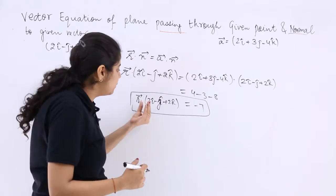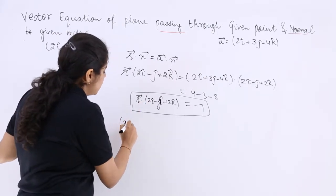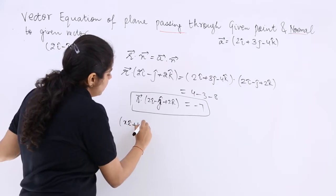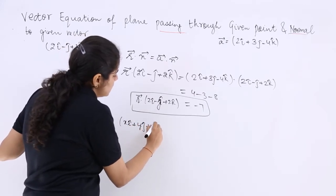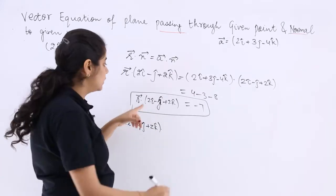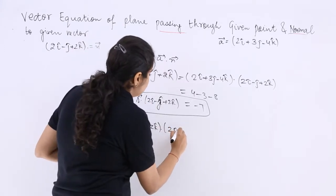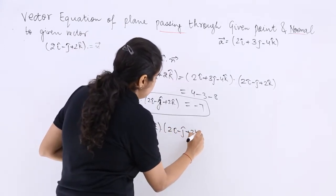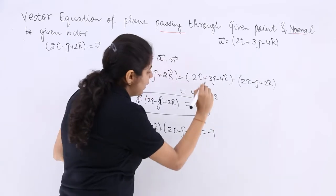The Cartesian form can be easily formed by substituting r = xi + yj + zk, taking the dot product with the same position vector, and it equals minus 7.